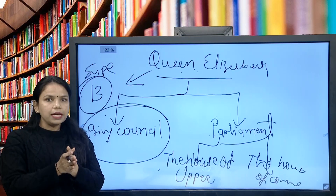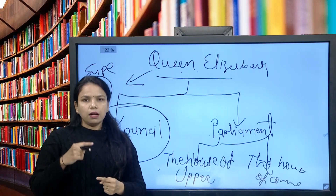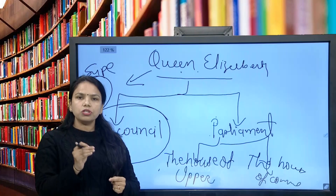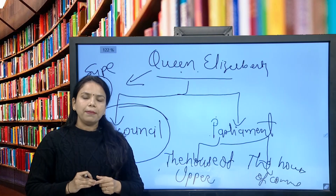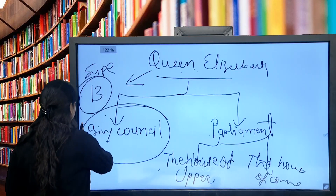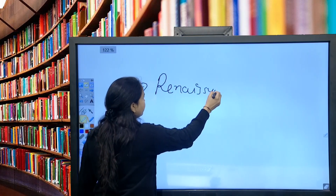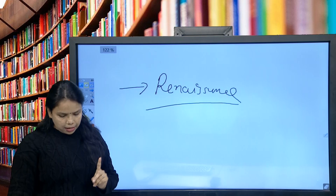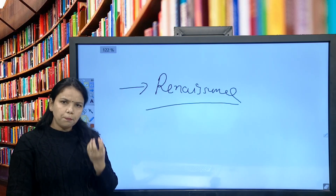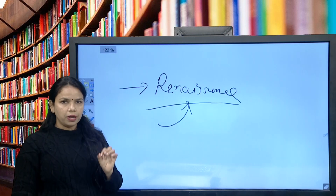Now in the next part, we are going to discuss about the social scenario during the Elizabethan age. In the social scenario, mainly we are going to discuss Renaissance, and the important events which are related to the movement of Renaissance.